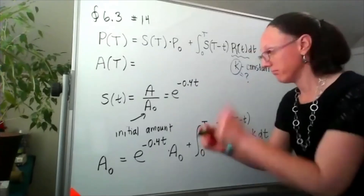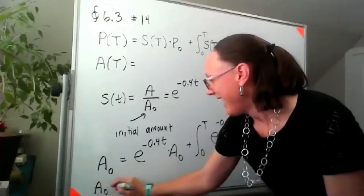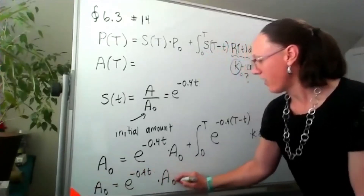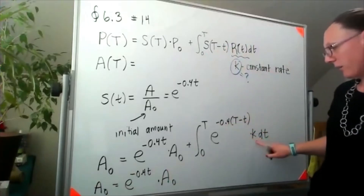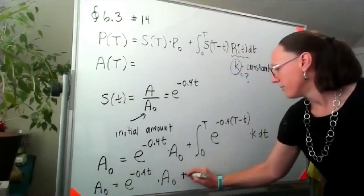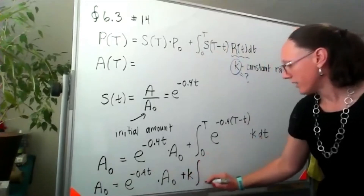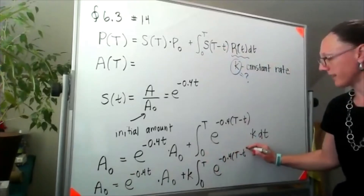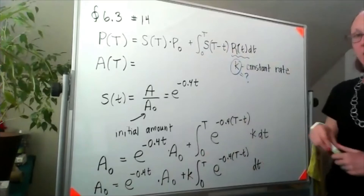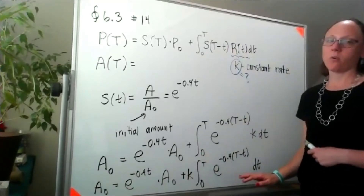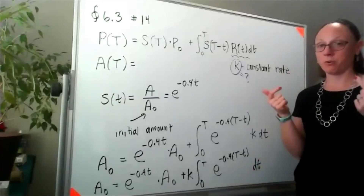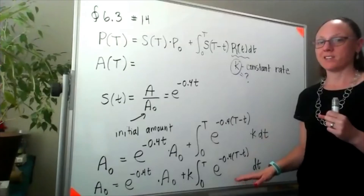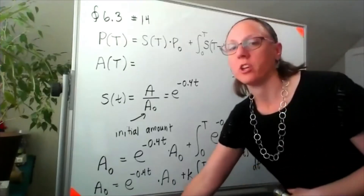So I've got a-naught equals e to the negative 0.4T times a-naught, and I can pull that K out in front of the integral from 0 to T of e to the negative 0.4(T minus t) dt. This is an exponential, but to integrate it I need to work through the U-substitution carefully, so I'm going to write it out.